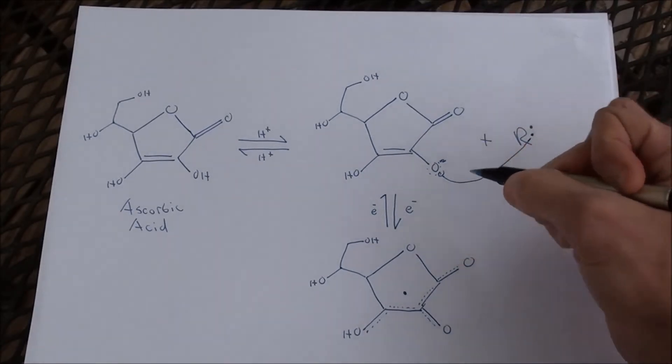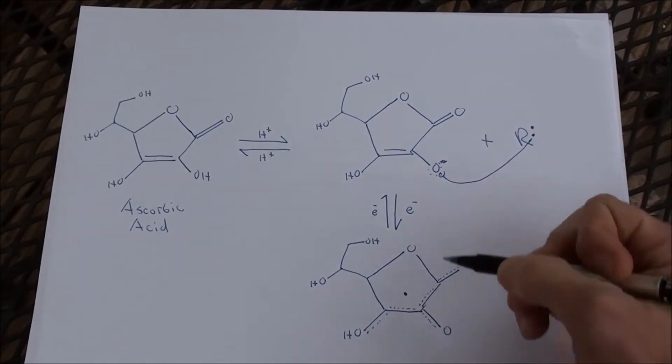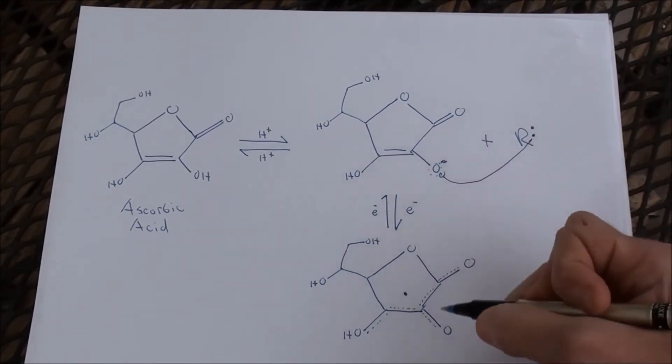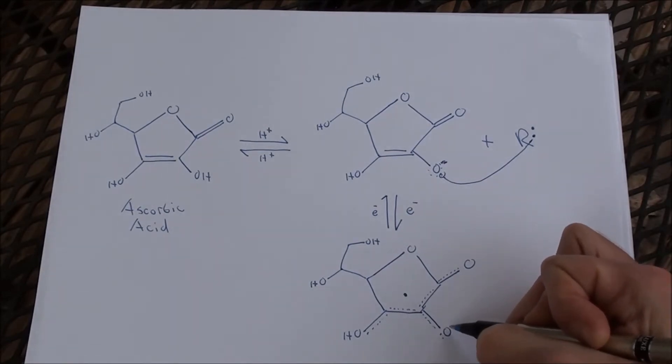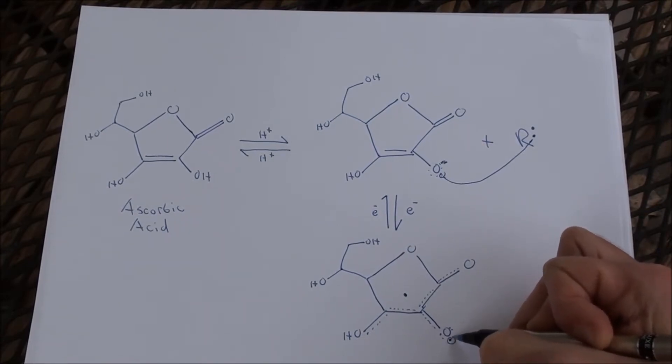And so in the process, you're left with this oxygen, this structure. So you lose an electron. Now you have one, two, one, two, three, four, five, and then here's six. So you have this lone pair.